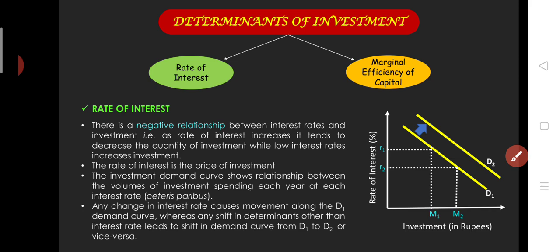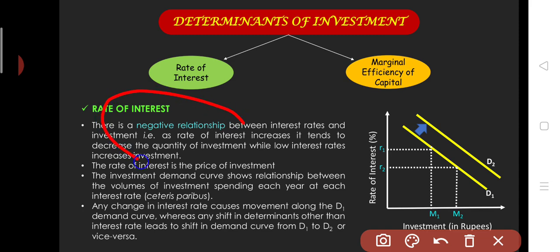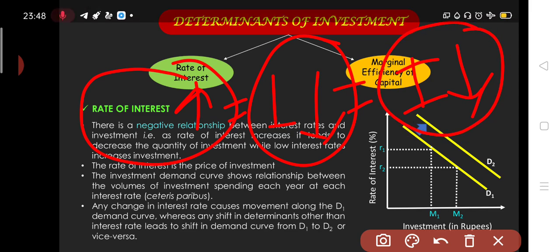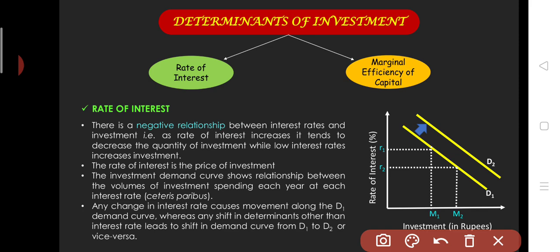Now, the determinants of investment. Keynes said that the rate of interest and marginal efficiency of capital affect investment. The rate of interest has a negative relationship with investment — they are inversely proportional. If the rate of interest increases, then borrowing becomes costly, so the loan amount decreases, and investment that comes from loans also decreases. So investment and the rate of interest have a negative relationship.